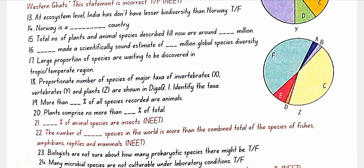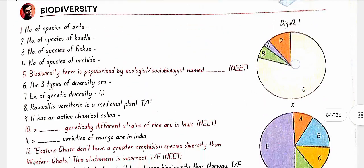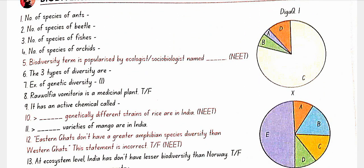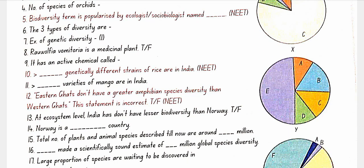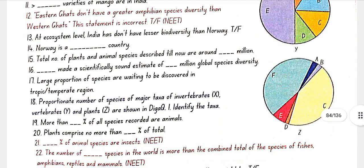Diagram 1 shows proportionate numbers of species of major taxa: invertebrates (X), vertebrates (Y), and plants (Z). In X: A = crustaceans, B = mollusks, C = insects, D = other animals. In Y: A = mammals, B = birds, C = reptiles, D = amphibians, E = fishes. In Z: A = mosses, B = ferns and allies, C = angiosperms, D = lichens, E = algae, F = fungi.